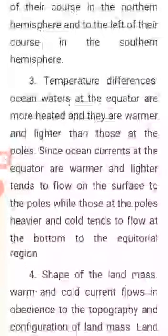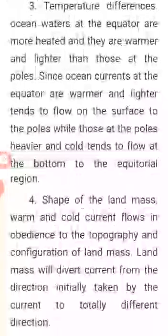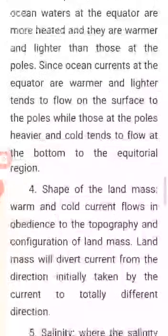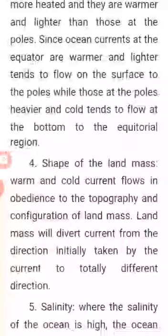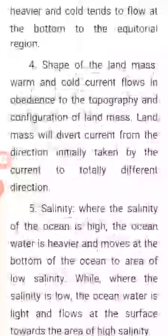Temperature differences: Ocean water at the equator is more heated, warmer, and lighter than that at the poles. Since ocean currents at the equator are warmer and lighter, they tend to flow on the surface towards the poles, while water at the poles is heavier and cold and tends to flow at the bottom towards the equatorial region.